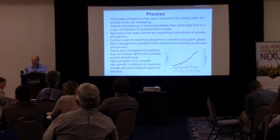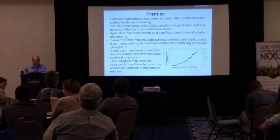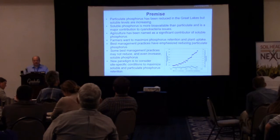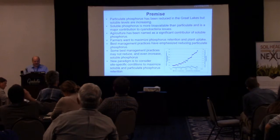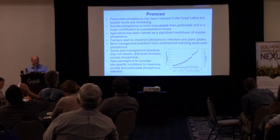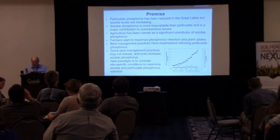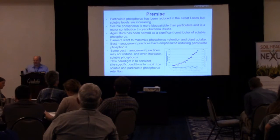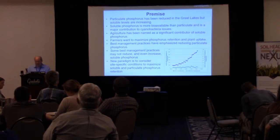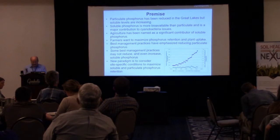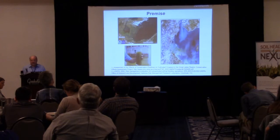This graph shows the imbalance of research. The red line is a keyword search on articles published about phosphorus, and the blue is on soluble phosphorus. I really consider soluble phosphorus as an emerging issue, as we're still not doing a lot of research on it, yet we think it's causing a lot of issues.